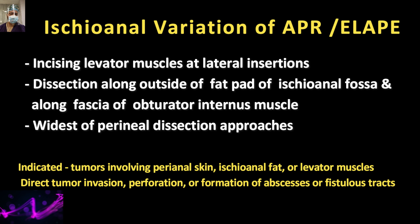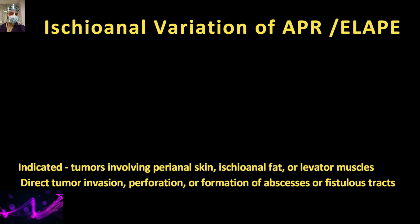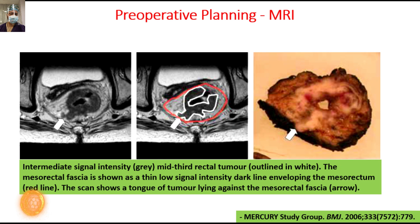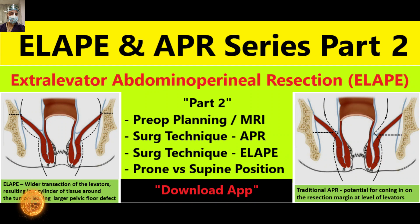The indication for ischioanal resection is when the tumor is directly involving the perineal skin, ischioanal fat, levator muscle, or when there is perforation or abscess formation, requiring excision of the whole fat pad. From here onwards — preoperative planning, surgical technique for APR and ELAPE — will be covered in the second part of this series, which is coming soon.